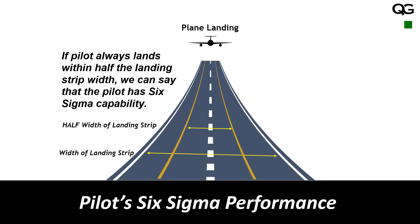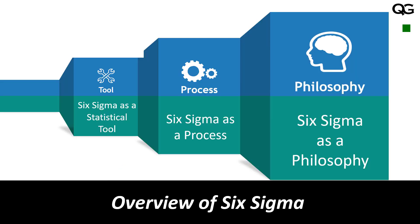If we generalize this concept: Six Sigma means that whatever tolerance you have, you just need to use half of that tolerance. For example, if you need to make a piece with a size between 100 and 102 — that is your tolerance — you will have Six Sigma performance if most of your pieces fall not between 100 and 102 but between 100.5 and 101.5, using one millimeter of tolerance instead of the two millimeters allowed.